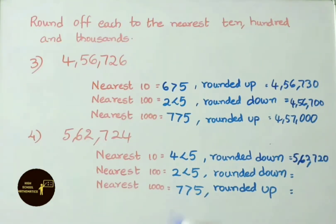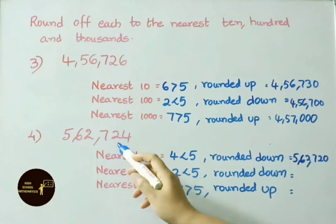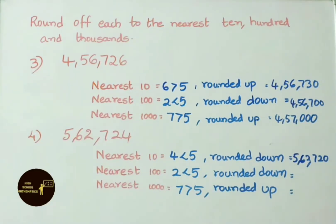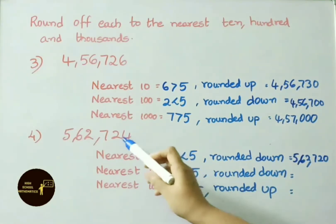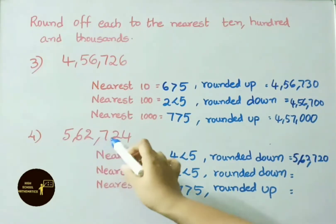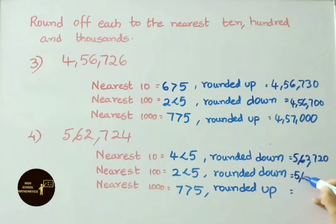Nearest 100 for 5,62,724: the digit to the right of the 100s place is 2. Since 2 is less than 5, we round down — make 24 into 00, and the 100s digit remains the same. So the answer is 5,62,700.